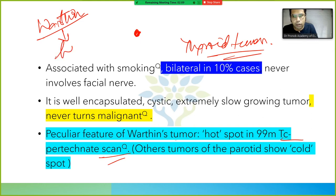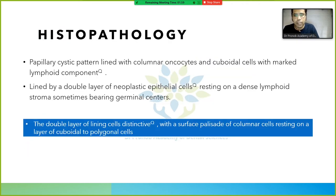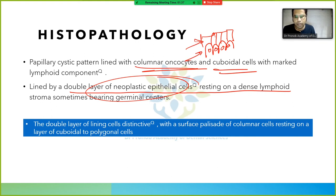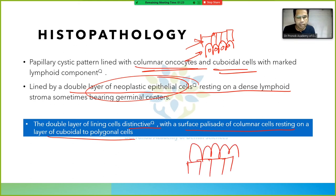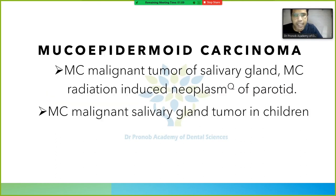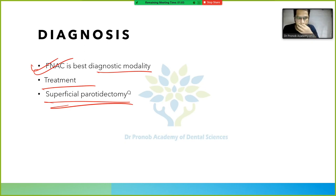Histopathology of Warthin tumor: papillary cystic pattern lined with columnar oncocytes and cuboidal cells, with a marked lymphoid component. There is a double layer of neoplastic cells — cuboidal cells below and columnar cells above — forming a distinctive surface palisade. Diagnosis: FNAC. Treatment: superficial parotidectomy.